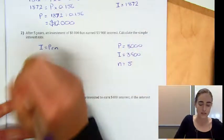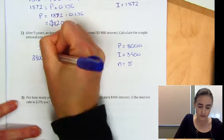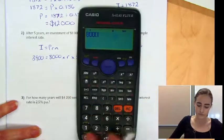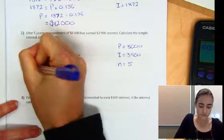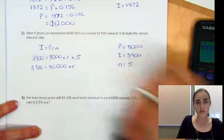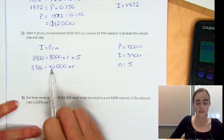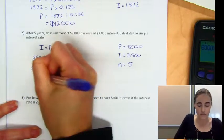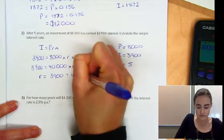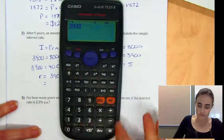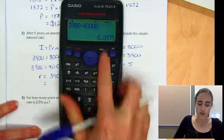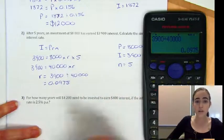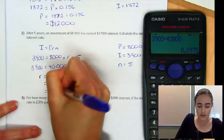So we'll substitute those three values in. We'll have $3,900 equals $8,000 times the rate times five. Again, we'll simplify this down. $8,000 times five will give us $40,000, still times our rate. So then to figure out what the rate is, we're going to go $3,900 divided by $40,000. So R is going to be $3,900 divided by $40,000, which will give us 0.0975. So that's as a decimal. But because we want our rate as a percentage, we're going to multiply that by 100, which would give us 9.75%.